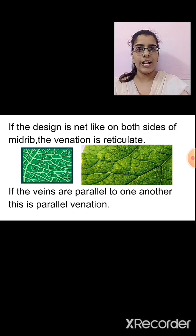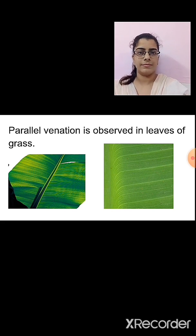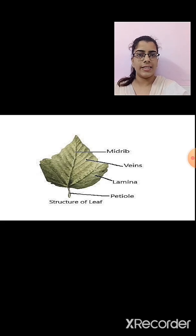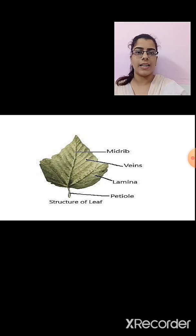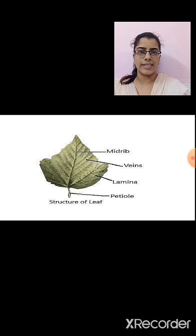Reticulate venation is seen in rose plant and tulsi plant, while parallel venation is seen in banana plant and grasses. In the image you can see how parallel venation looks. You can also see what the midrib, veins, lamina and petiole look like — this is the structure of the leaf. Reticulate venation has irregular or net-like veins, and parallel venation is when the veins appear parallel to each other.